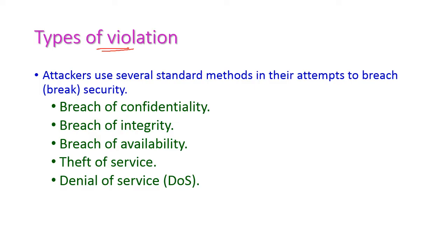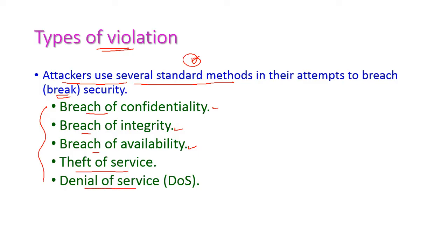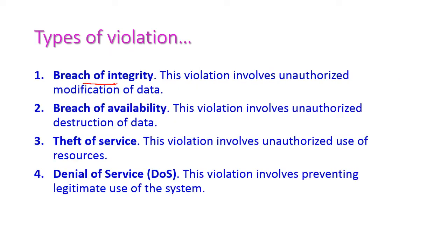Attackers use several standard methods to breach security. The different types of violations are: breach of confidentiality (breaking confidentiality), breach of integrity — which involves unauthorized modification of data without the knowledge of the owner — and breach of availability, which means unauthorized destruction of data, where data is deleted or modified without the owner's knowledge.